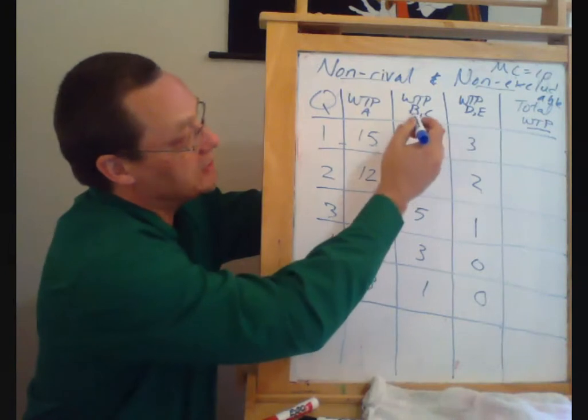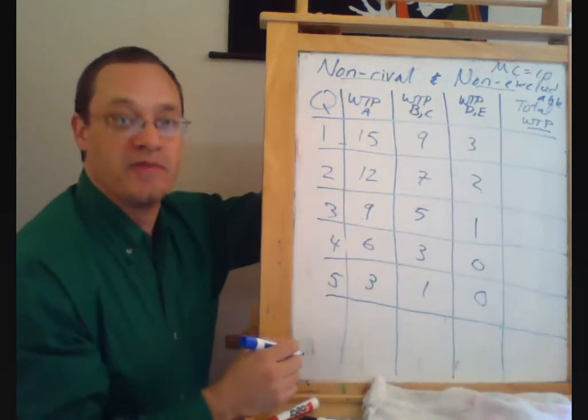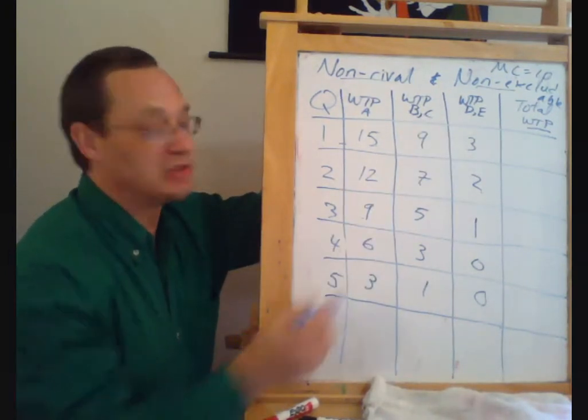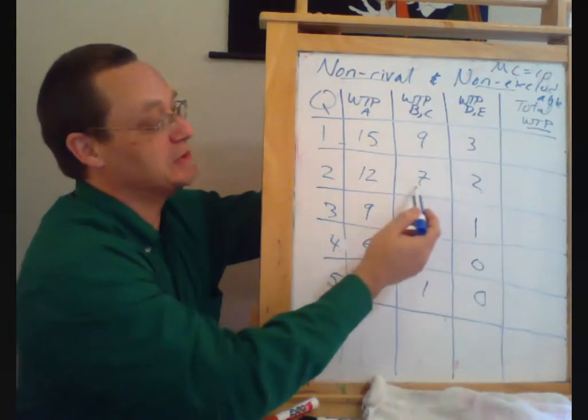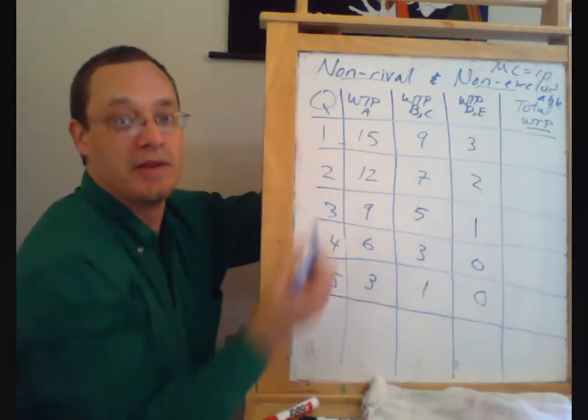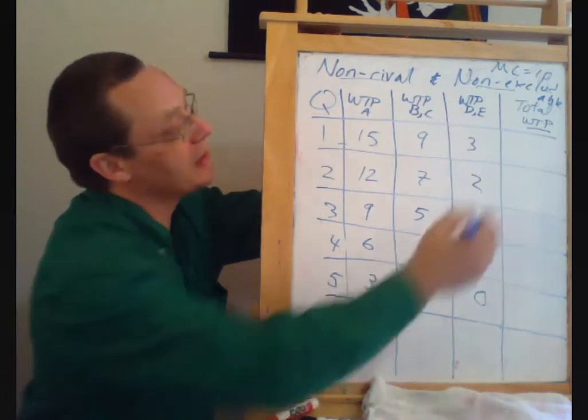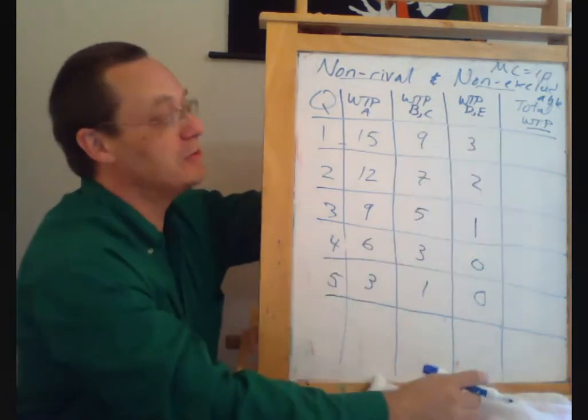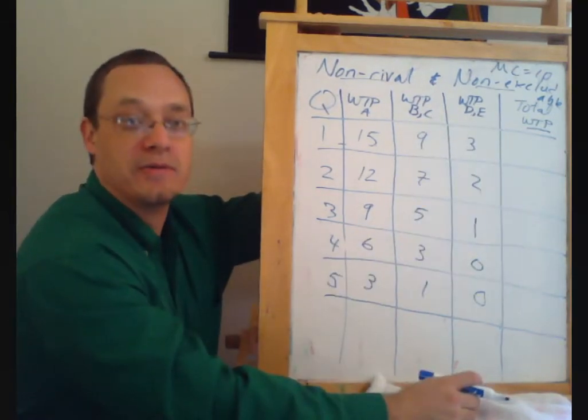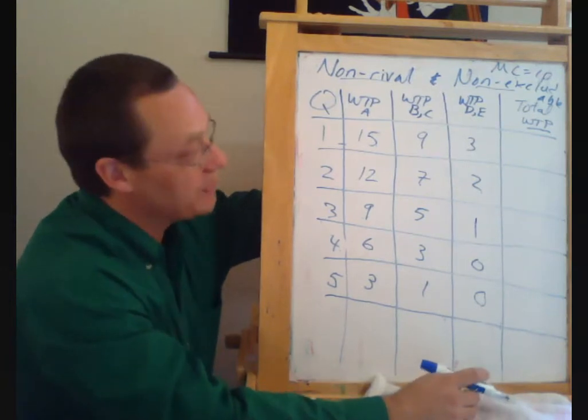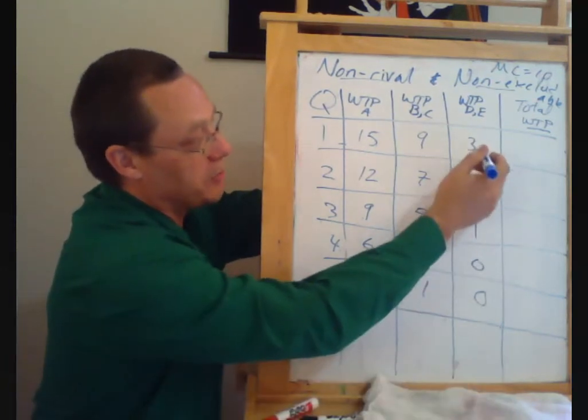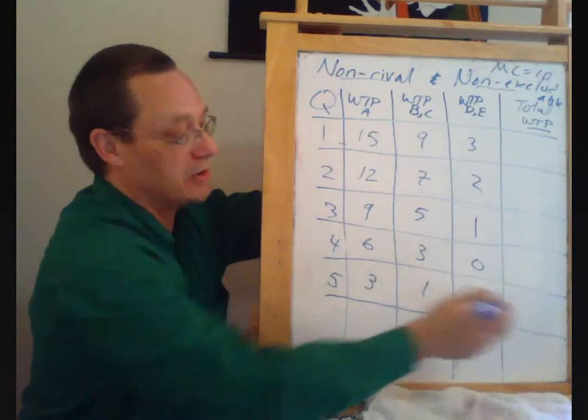And I'm going to have two people who value the street lights a little bit less. They value the first one at $9, the second one at $7, third one at $5, and so on and so forth. And finally, two more people who value the street light even less, and so their willingness to pay is $3, $2, $1, $0, $0.